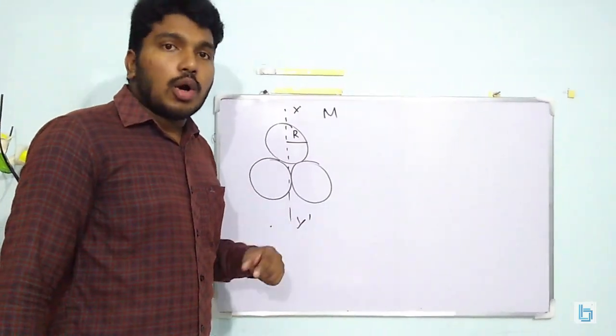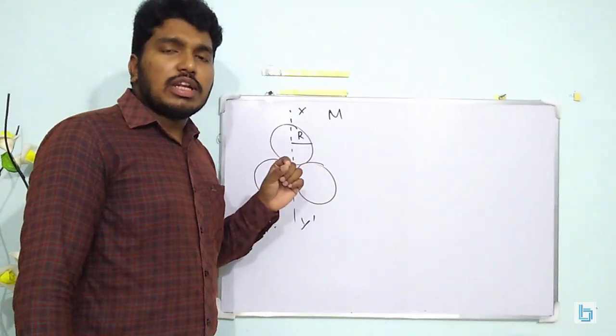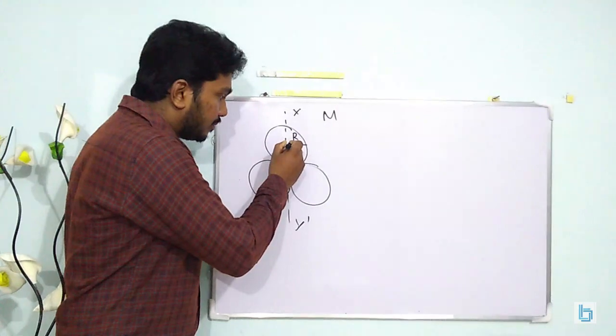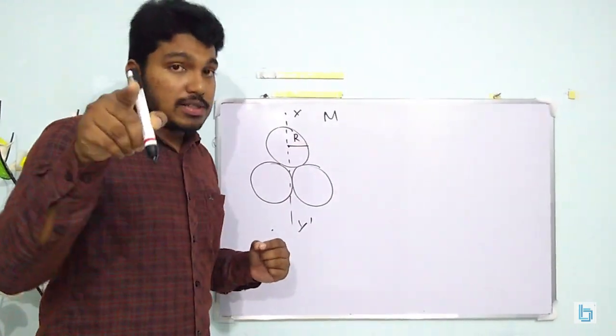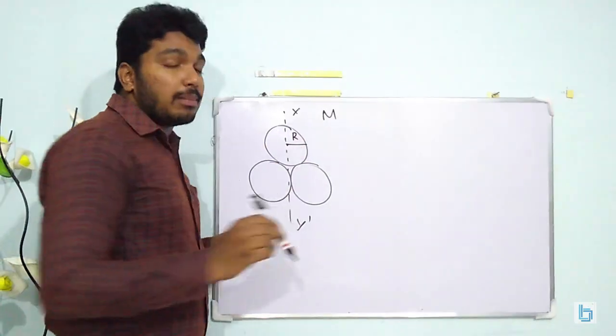Now we know that with respect to a ring, the moment of inertia about an axis perpendicular to it and passing through its center is mr square, and about its diameter it is mr square by 2.